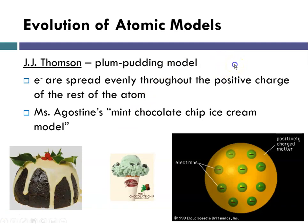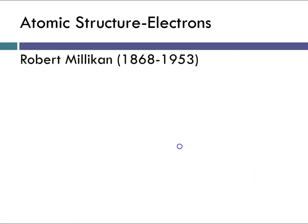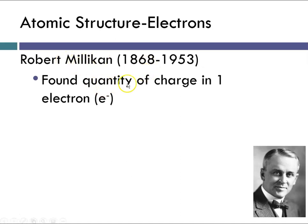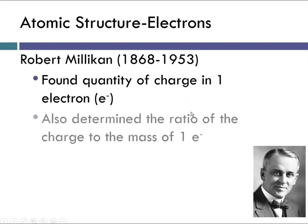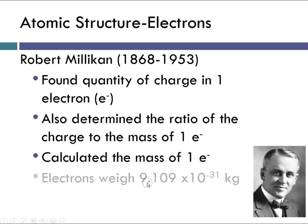Since we're talking about electrons, we should also discuss the work of Robert Millikan and his oil drop experiment. He was able to calculate the quantity of charge on one electron, determined the ratio of charge to mass, and calculated the mass of an electron to be 9.109 × 10⁻³¹ kilograms. Since 10 to the minus 31 means 30 zeros in front of this number, that is why we effectively set the mass of an electron as zero.